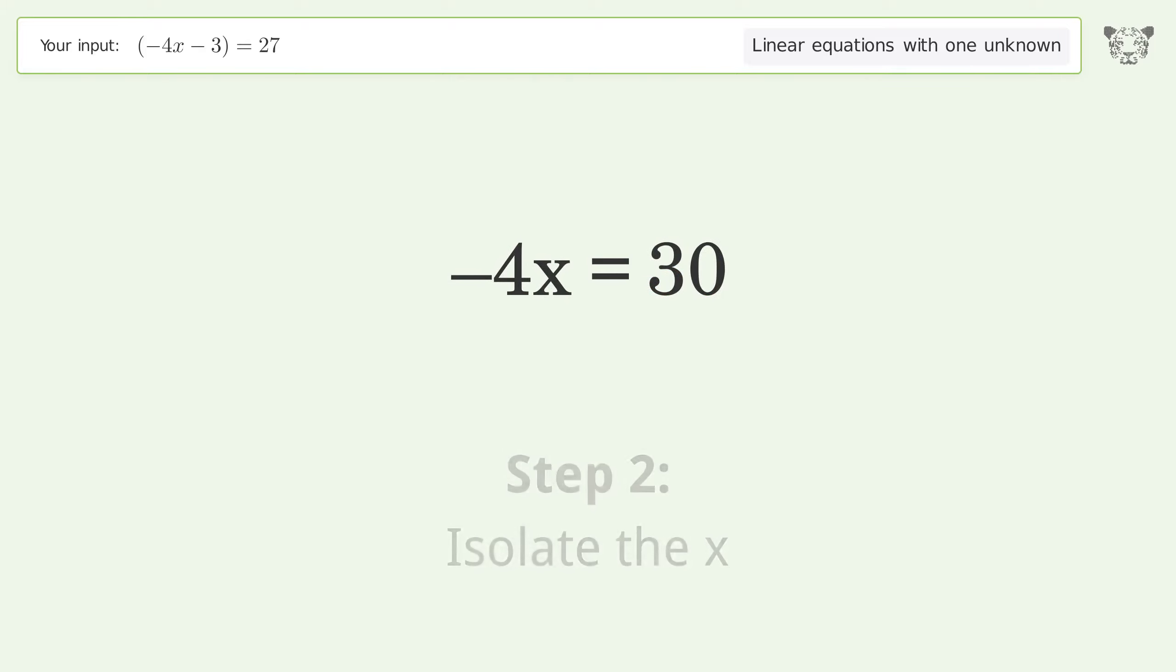Isolate the x. Divide both sides by negative 4. Cancel out the negatives.